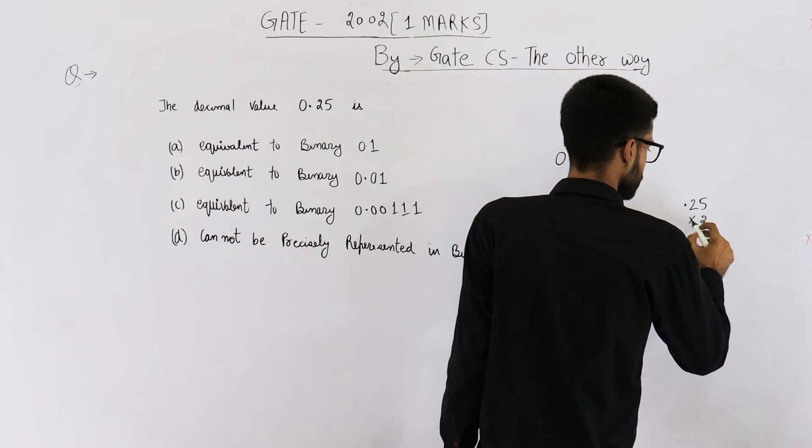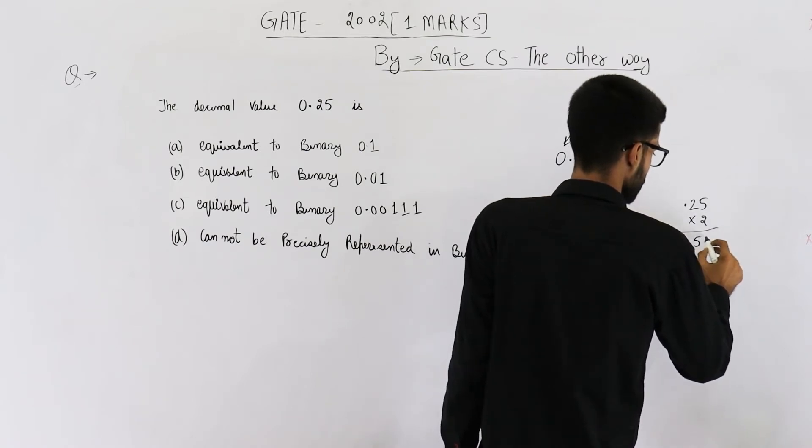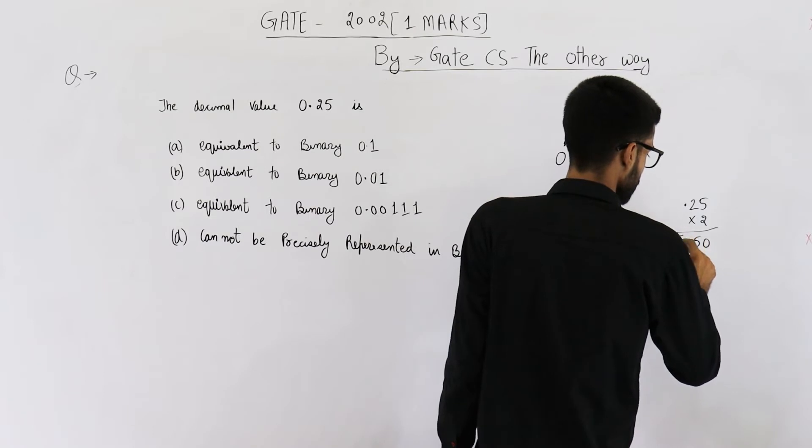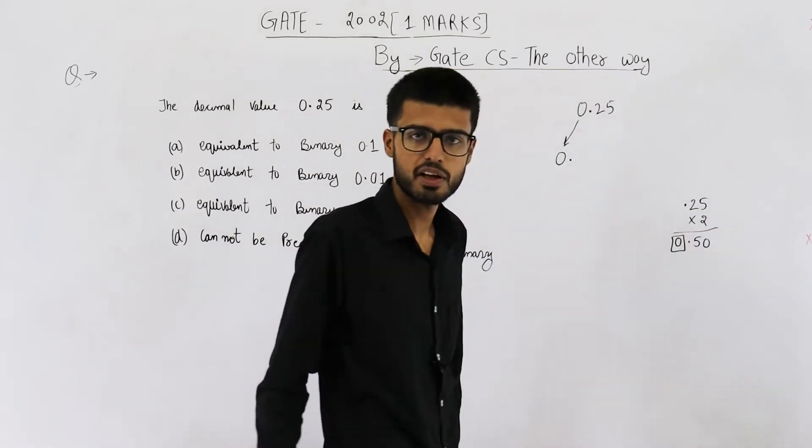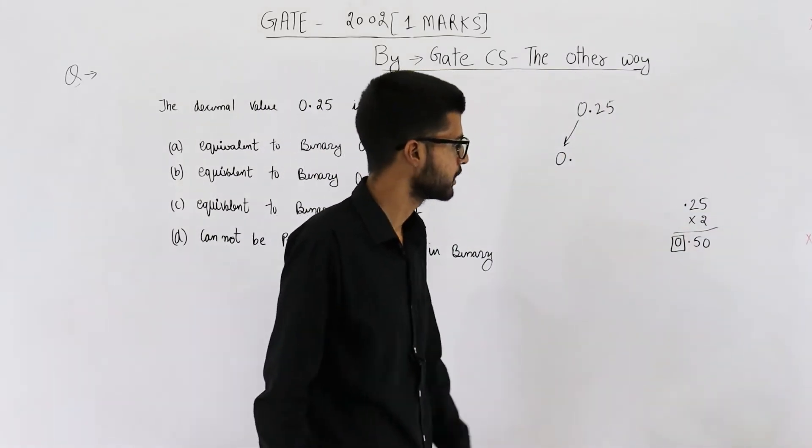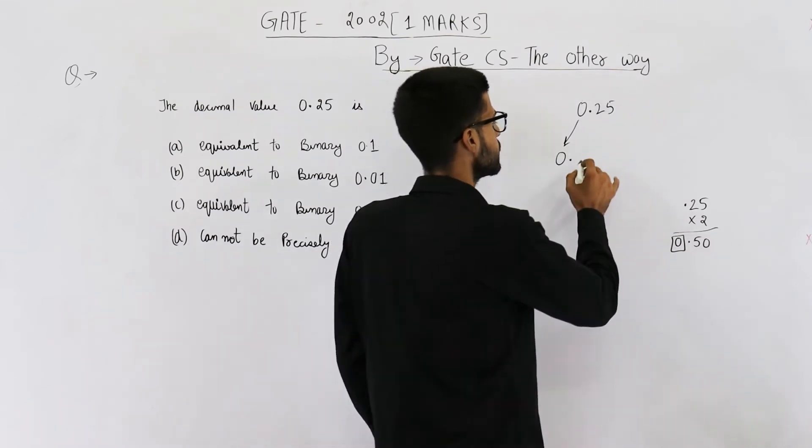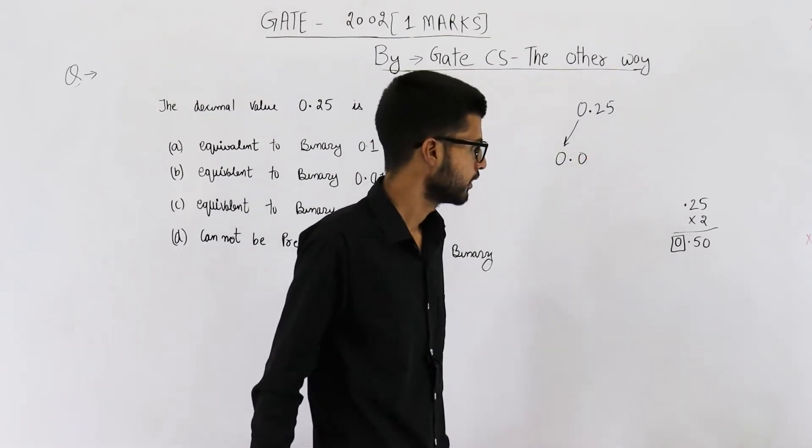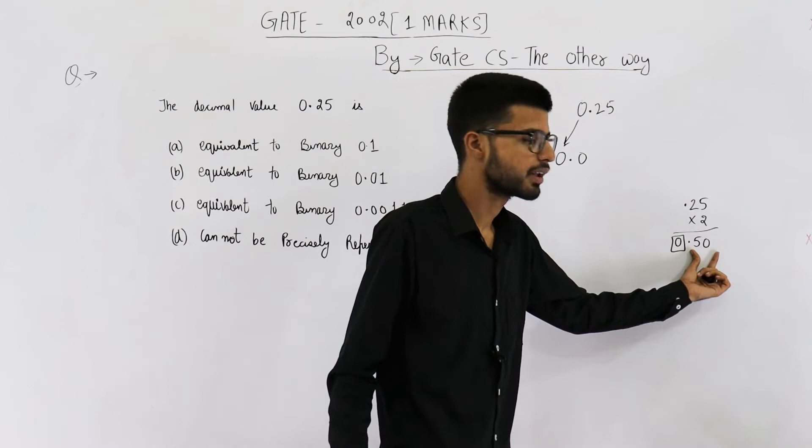So 0.25 is multiplied by 2. The answer is 0.50. That means we need to write 0 here. Now again multiply this number by 2.